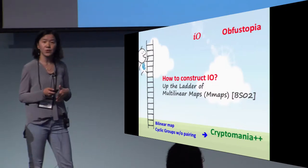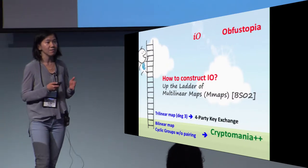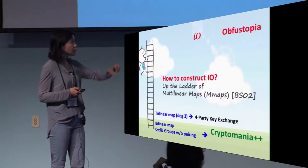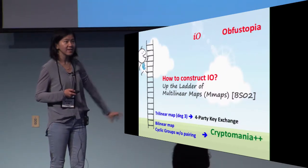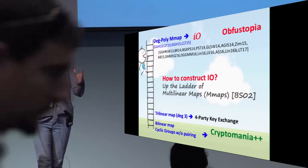Multilinear map will enable us to do even more amazing things. The simplest example being that trilinear map will let us do four-party key exchange. And if you turn the knob of multilinearity all the way up to polynomial degree, then you'll get IO and obfustopia.